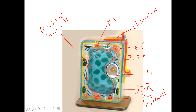Plants do have a centrosome, they just don't have centrioles inside it. They do still have ribosomes — little white dots — which still carry out protein synthesis. So if you were to see this picture, you should be able to tell me it's a eukaryotic cell because it has a nucleus, and it's a plant cell because it has chloroplasts and a cell wall.